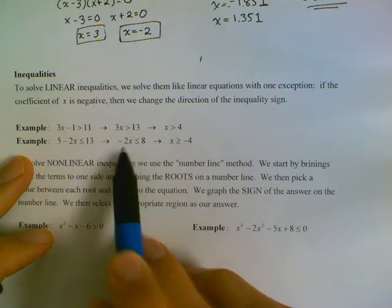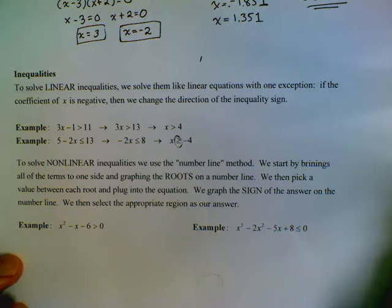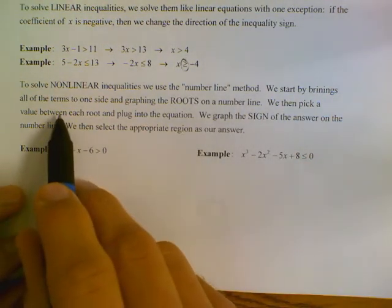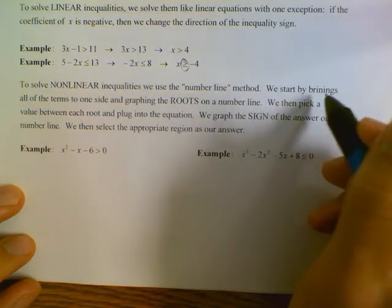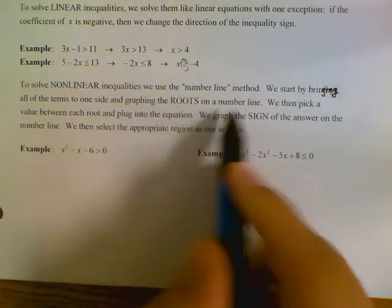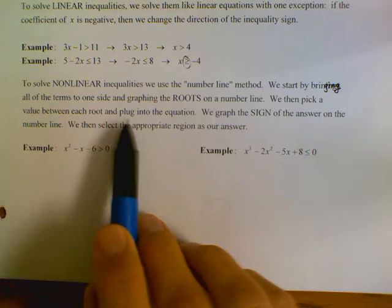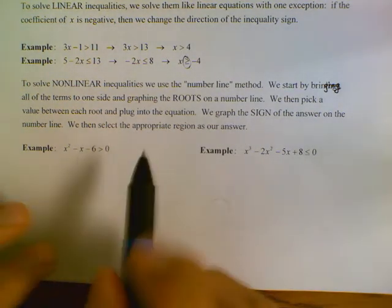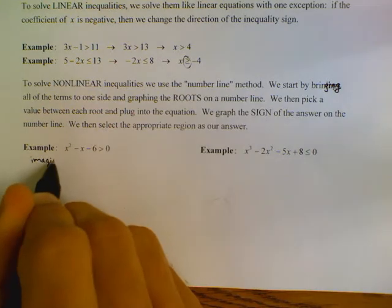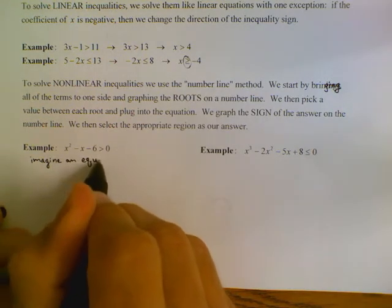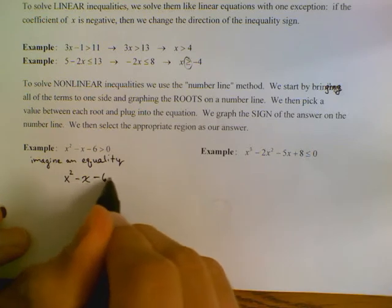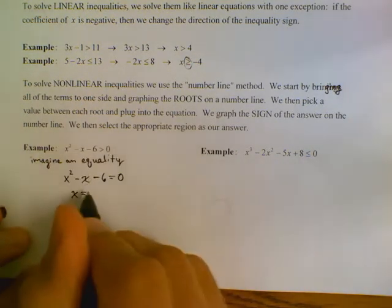To solve nonlinear inequalities we use the number line method. We bring all the terms to one side and graph the roots on the number line, then pick a value between each root and plug into the equation. I imagine an equality: x squared minus x minus 6 equals 0, and I get my two roots — the same roots we found when solving by hand.